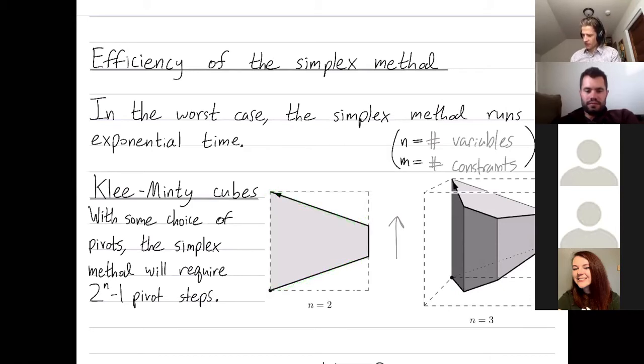Same thing for the 3D cube. We're still optimizing in the vertical direction. So starting from this vertex, you could get to the optimum in a single step. But you can also improve step by step by traversing every other vertex along this cube. And so there are pivot rules that would force you to pass along every single vertex, taking exponentially many steps.